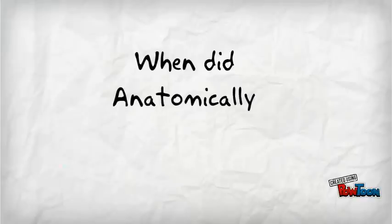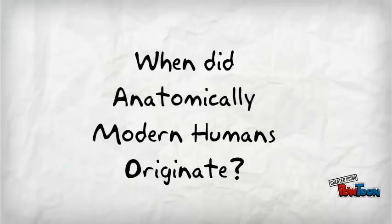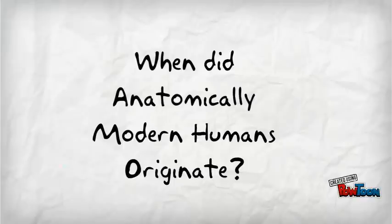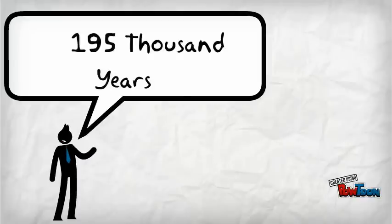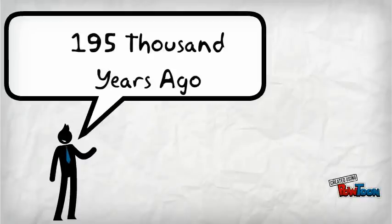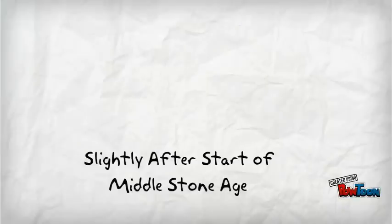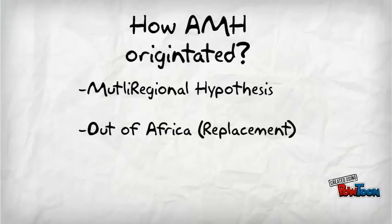So when did anatomically modern humans originate? They originated 195,000 years ago, a little after the start of the Middle Stone Age. Below are the two prevailing hypotheses in how anatomically modern humans originated.